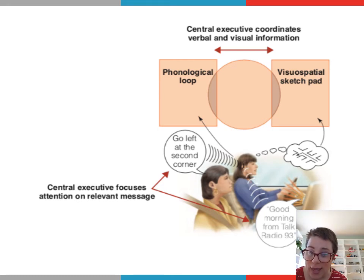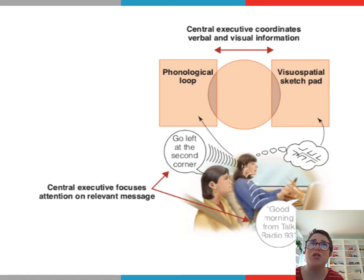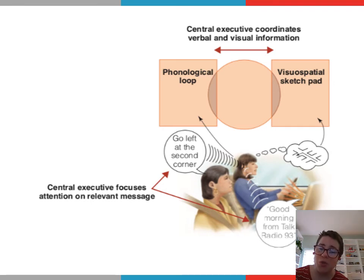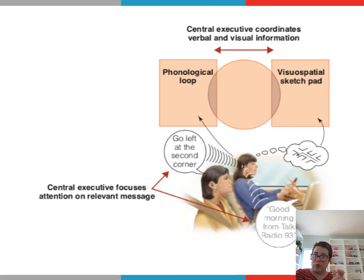Your phonological loop is paying attention to the directions as your friend speaks them — that auditory or verbal information is being held and processed by the phonological loop. As you attempt to visualize your surroundings and create a mental map of the streets leading to the restaurant, that information is going to be processed by your visuospatial sketchpad. And while you are doing that, your central executive is coordinating your attention between the phonological loop and the visuospatial sketchpad and combining this information together.